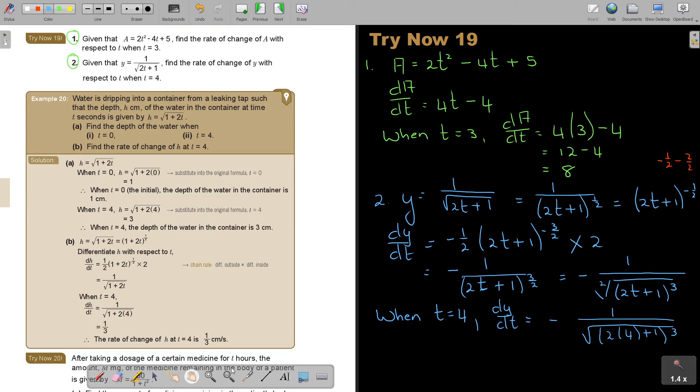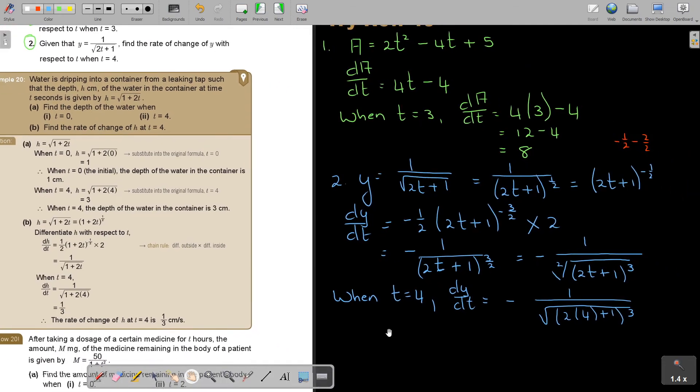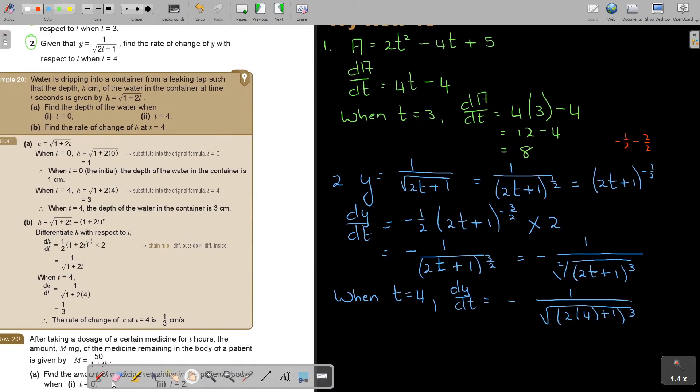And that is going to give me negative 1 over, now this is going to be 8 plus 1. That's going to be 8 plus 1, and that's going to be to the power of 3. So, it's going to be 8 plus 1, so it's 9 to the power of 3.